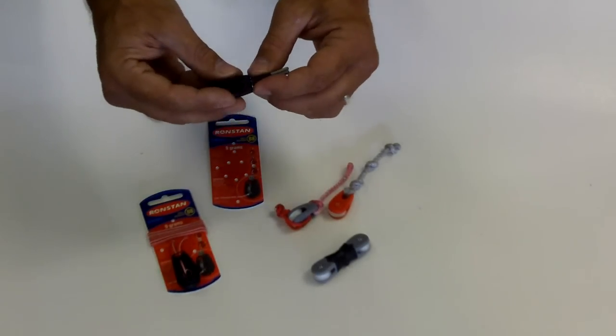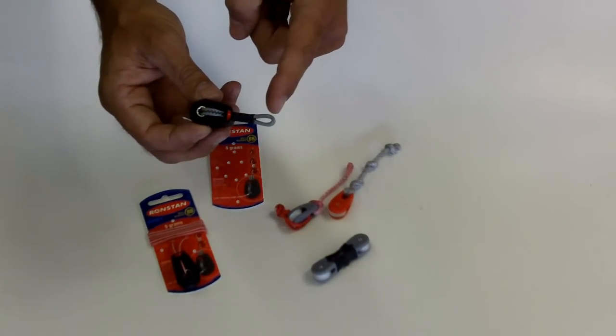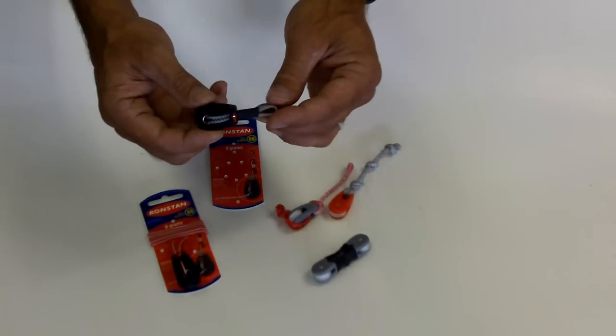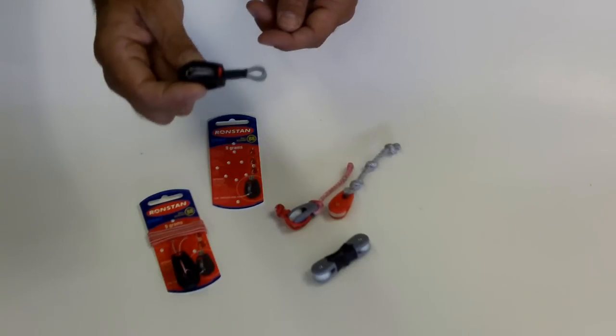But here at FixMyKite.com and Kiteboarding.com, we have designed it with a sewn stitched line going through the pulley, which is described by the manufacturer to get its top rating of about 1,200 pounds.